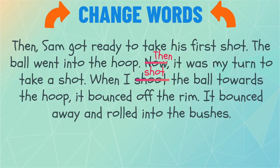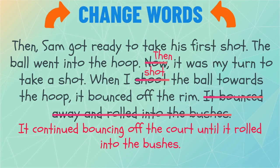I also see a part where some of the words repeat themselves and don't give enough detail. This might be confusing to my readers, so I'm going to change them. There. Much better. How about a boring word that I need to change? I can change the words 'got ready' to 'prepared.' My readers can now imagine just how concentrated Sam was on making that shot. I also see a part where I can use a word to describe the sound the ball made when it went into the hoop. This is a craft move called onomatopoeia.